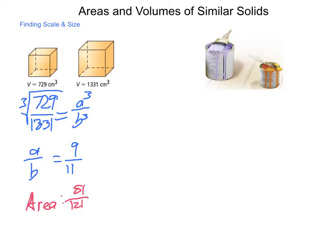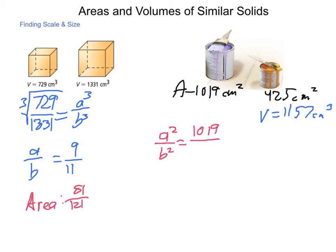Next, often when we go shopping for items, they offer them in different sizes. And you want to be able to buy what's best for your money without wasting and getting too much. So the lateral areas of two similar paint cans, as you see here, are 1019 square centimeters and 425 square centimeters. And the volume of the smaller one is 1157 cubic centimeters. And we want to find the volume of the larger one.